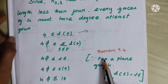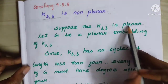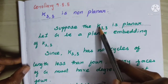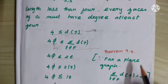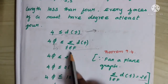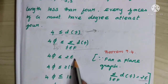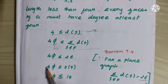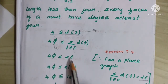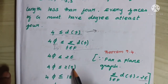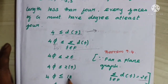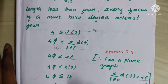We use the condition for a plane graph: the summation of D(F) for F belonging to F equals 2ε. Suppose that K3,3 is planar, so we use this condition. Therefore 4φ ≤ 2 × 9, since ε equals 9 (the total number of edges is 9). So 2 × 9 = 18, and thus 4φ ≤ 18, which gives φ ≤ 4.5, so φ ≤ 4.